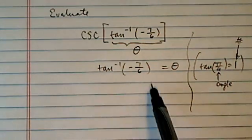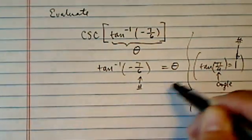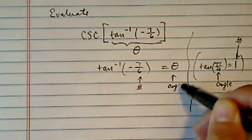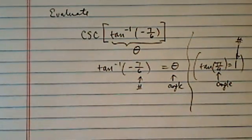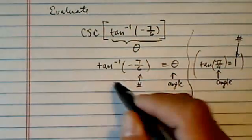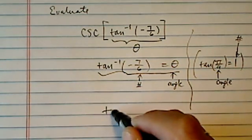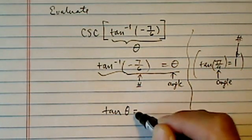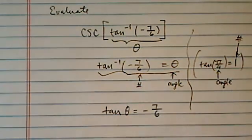whereas arc tangent is just the opposite. We put a number in here and we get an angle out. Once you have this one, it's a little bit easier, because once you write into this, you can say, well, tangent of theta is equal to minus 7 over 6.